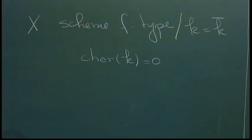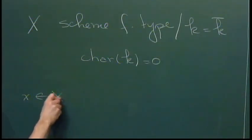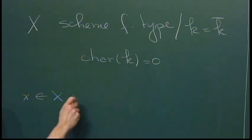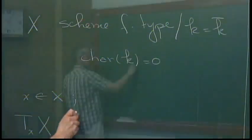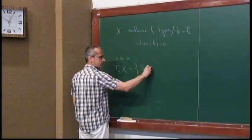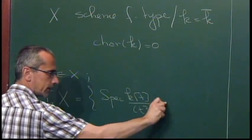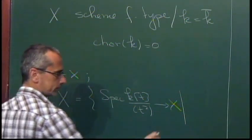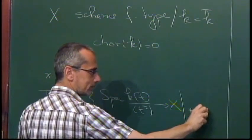We all remember Zariski's notion of tangent vectors. So a tangent vector to a point — if x is a point in X — the tangent space at x consists of all maps from Spec K[T]/(T²) to X such that the unique point goes to x.